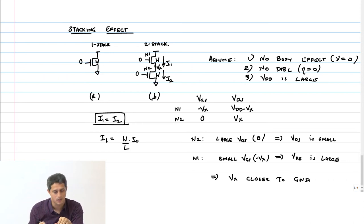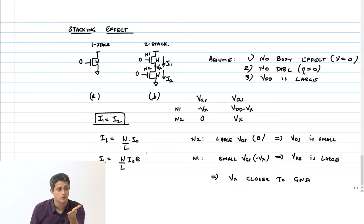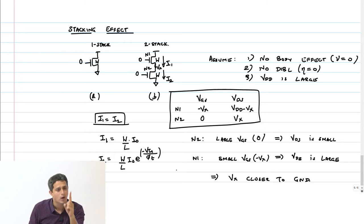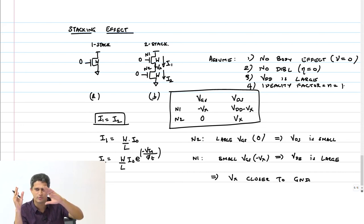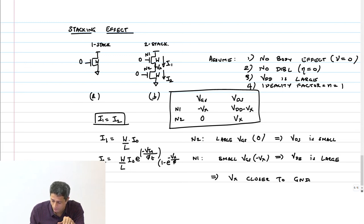Now let us write the current equations. I2 is: (W/L) × I₀ × e^(−V_TN / φ_T) × (1 − e^(−V_X / φ_T)). Making one more assumption: ideality factor N equals 1, so the subthreshold slope is at minimum.